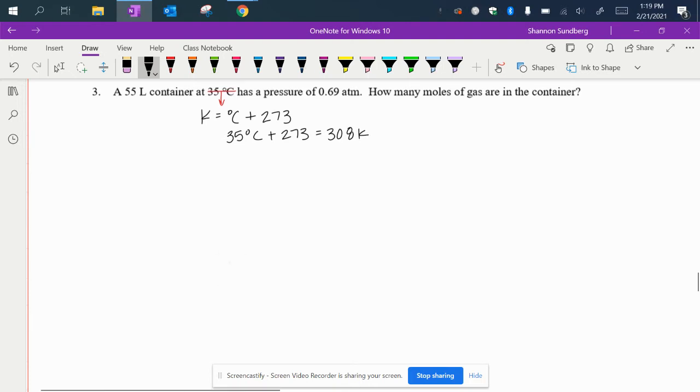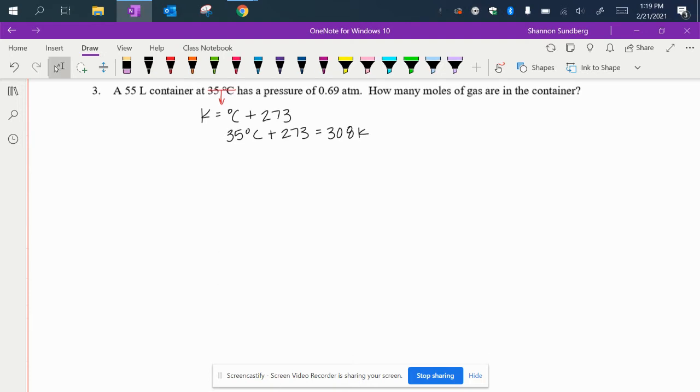As always I like to write my units out just to know what I have and what I'm solving for. So we've got P, V, N, R, T. So it says it's a 55 liter container. Liters is volume.